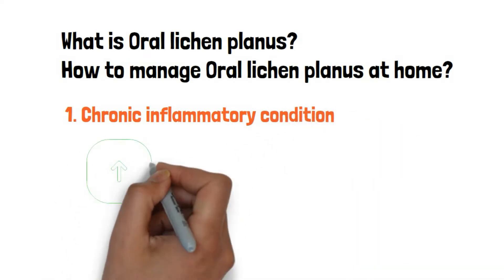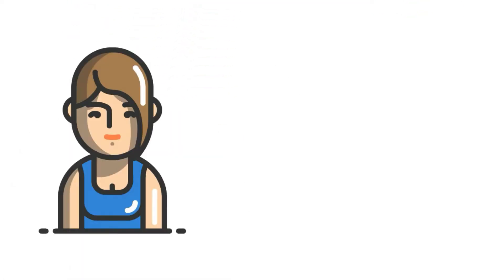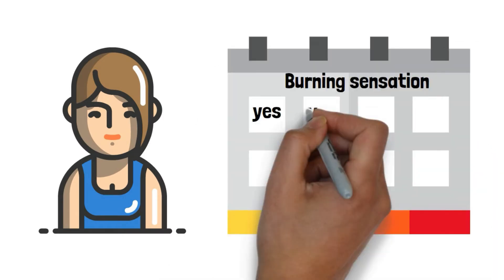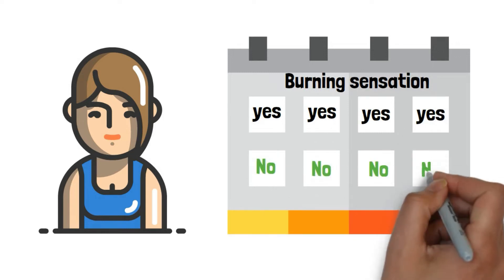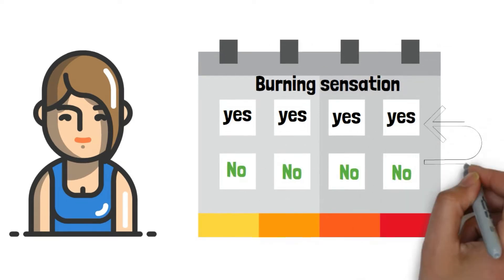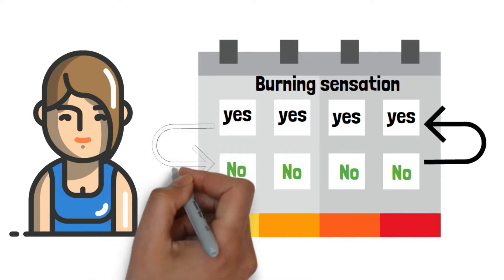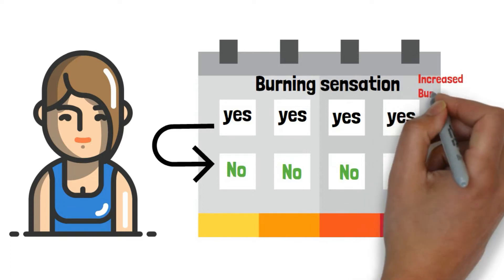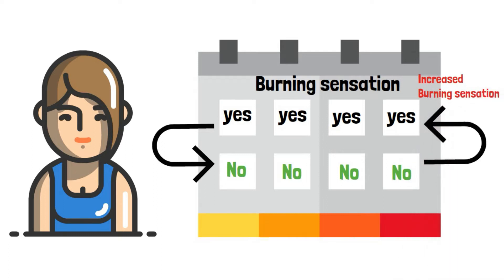One peculiar feature of lichen planus is it has periods of waxing and waning. A patient with oral lichen planus complains of a severe burning sensation for a few days or weeks; later the disease becomes dormant for another few weeks, and again the same cycle repeats. In simple words, the disease occurs cyclically, with periods of severe illness followed by periods of no infection — this is the principal characteristic feature of lichen planus.